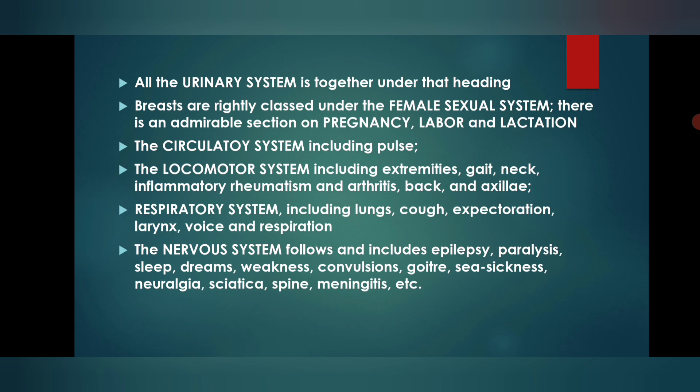The respiratory system includes conditions of lungs, cough, expectoration, voice, and respiration. The nervous system includes rubrics like epilepsy, sleep, dreams, weakness, convulsion, neuralgia, sciatica, meningitis, etc.